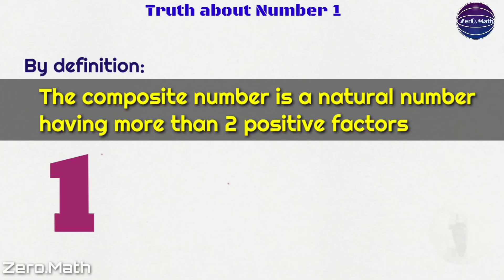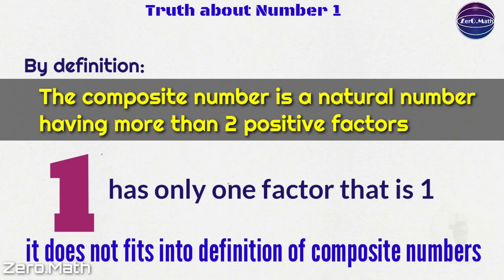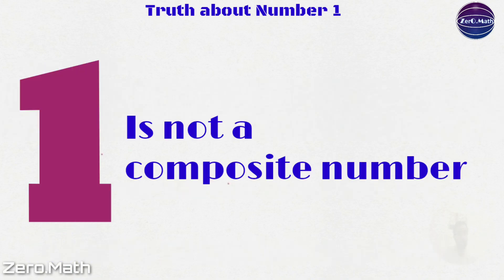Now, if you look at number 1, it has only one factor, that is 1, and that is the reason number 1 is not a composite number.